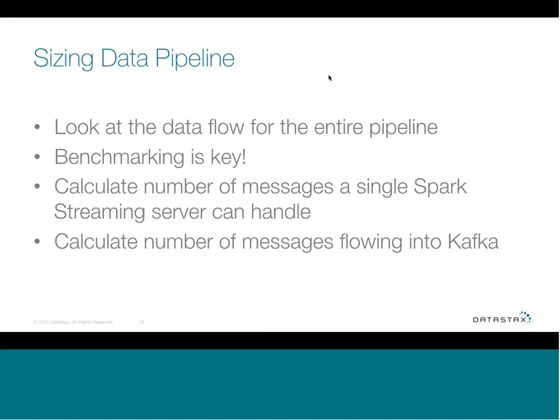Benchmarking is key. You need to figure out a small stream job that you can start testing — how much processing your individual servers can handle — and then calculate from that. Based on how much an individual server can process, and calculating the number of messages flowing into Kafka, we can get an overall view of our data pipeline. The total servers needed is basically equal to the number of Kafka messages divided by the number of messages your streaming server can process. For example, if Kafka has 100,000 messages flowing in and your servers can handle 20,000 messages, then you need five servers.